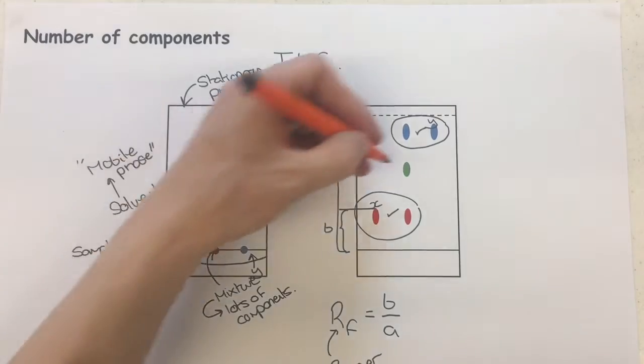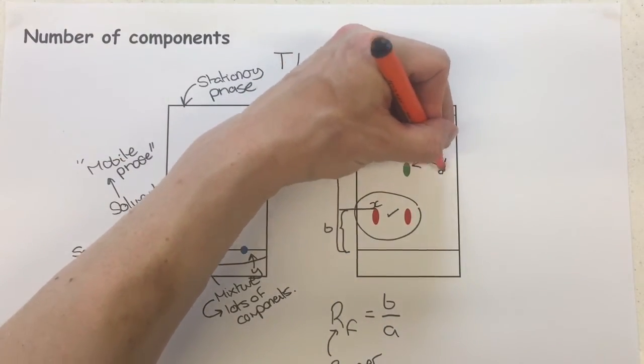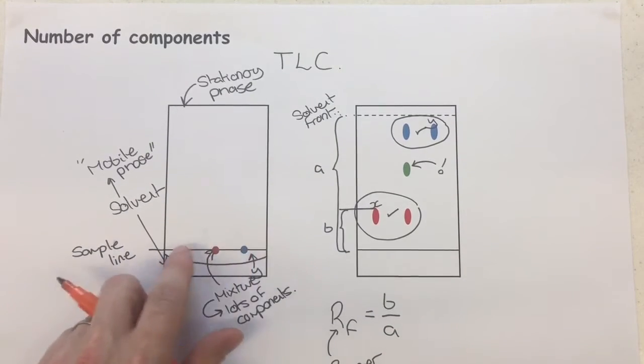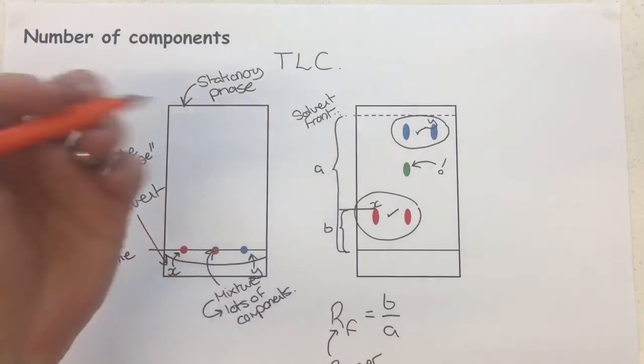We also seem to have something in the middle here, a green dot. And the green dot wasn't one of the comparisons to the controls, so it wasn't X or Y. It could be something else. It could be Z.